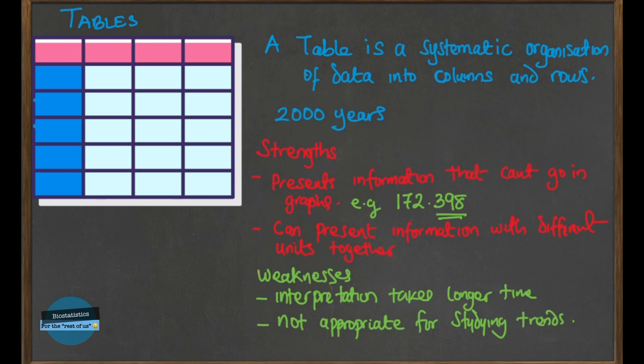Another shortfall is that tables are not really appropriate for studying data trends, because it's not easy to trace a change in a figure just by looking at numbers. A graph does a very good job of easily showing complex information in a very simple way — you can see those changes visually. Since all data in a table is of equal importance, it's usually not easy to identify and selectively choose the most important information, which is where graphs come in.